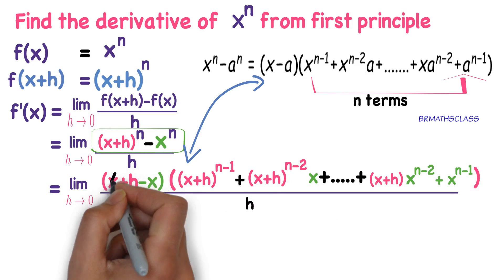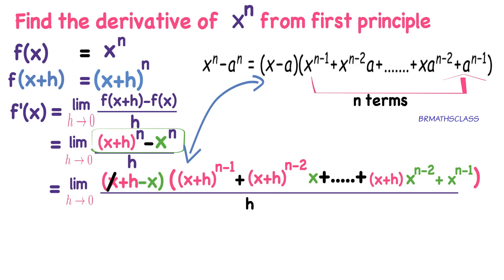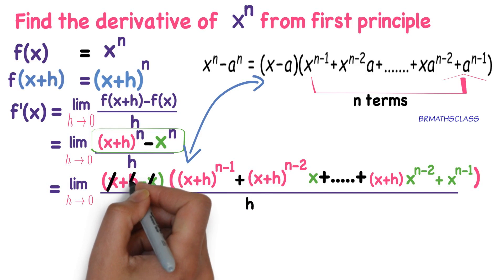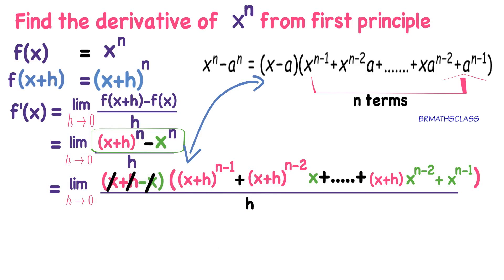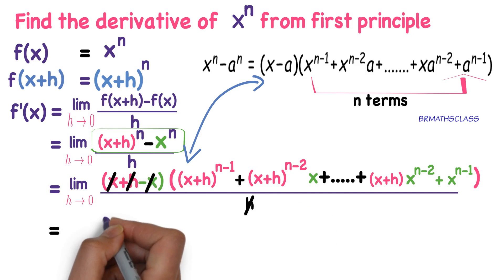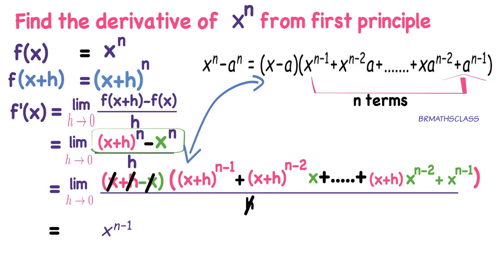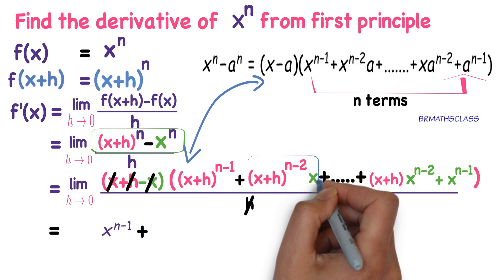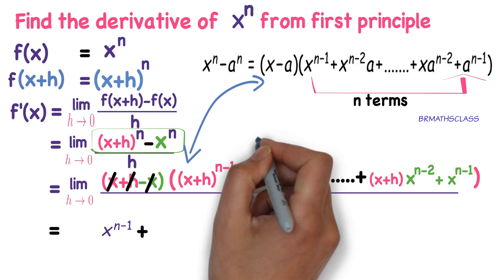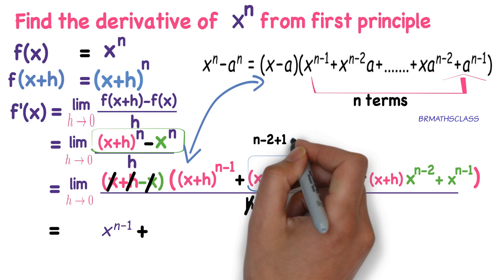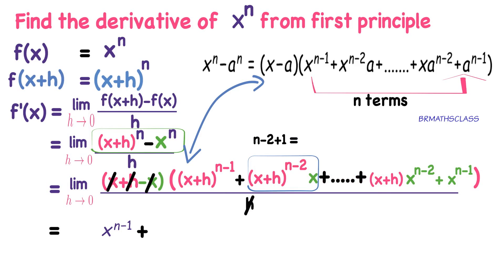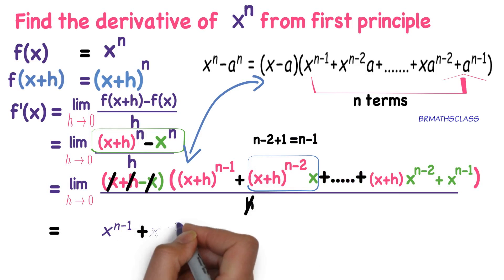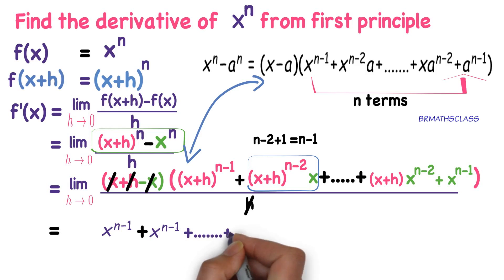Now observe: x plus h minus x in the beginning will get cancelled, leaving h in the numerator. That numerator h and denominator h will get cancelled. Now you apply the limit. Applying the limit means wherever h is there, you put 0. In the first term you will get x power n minus 1. In the next term, in place of h you write 0, and you get x power n minus 2 into x power 1. When bases are equal, powers should be added: n minus 2 plus 1 is n minus 1.